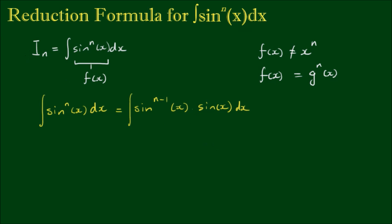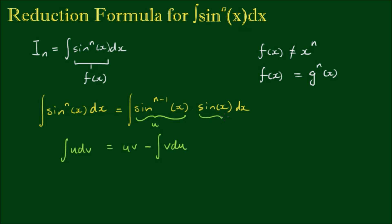So now we have two parts. The rule for integration by parts is: the integral of u dv equals u times v minus the integral of v du. In our problem, let's call the sine to the n minus 1 power as u, and let's call sine of x dx as dv. So we've got our two respective parts.